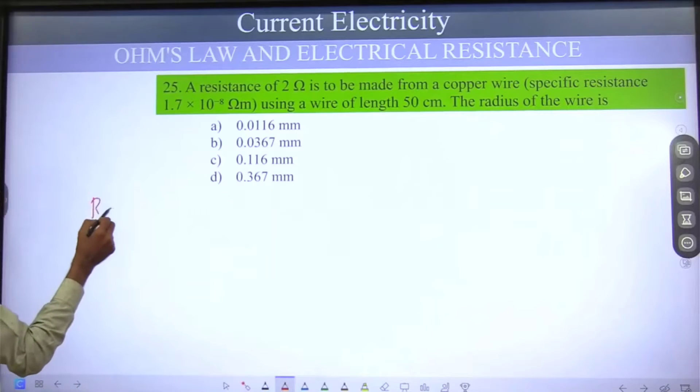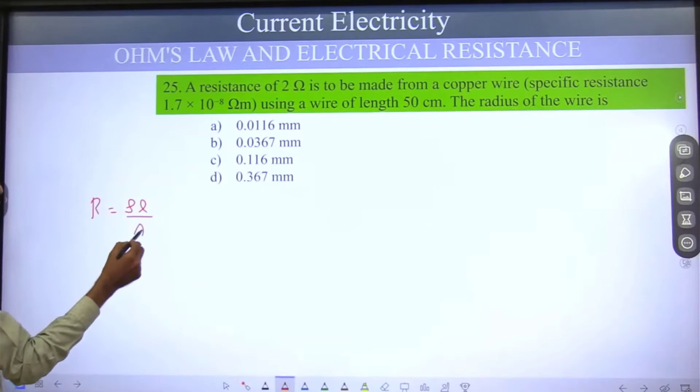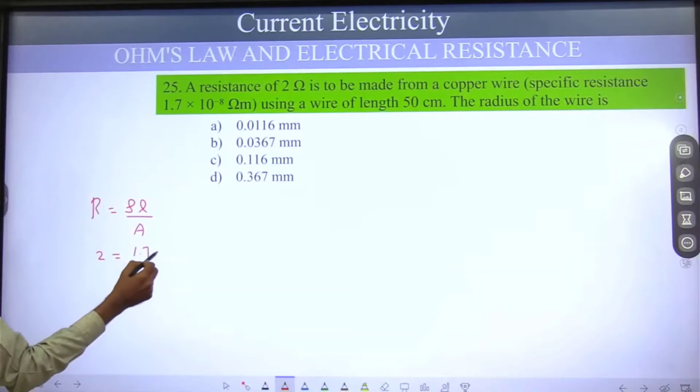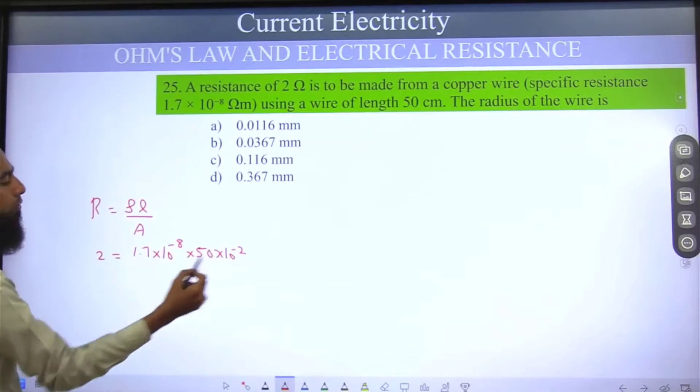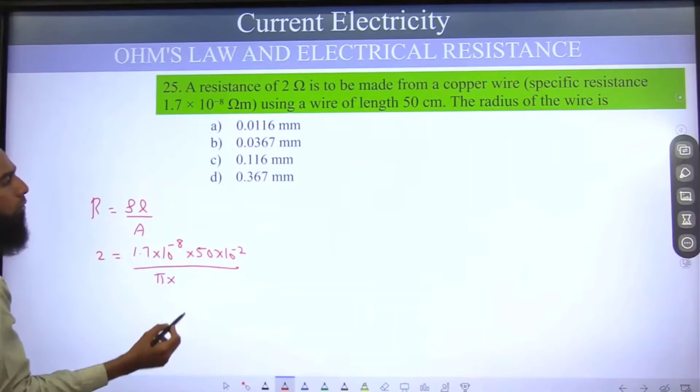Resistance is equal to rho l divided by A. Resistance is equal to 1.7 times 10 power minus 8, length is 50 into 10 power minus 2, area is equal to pi into r square.